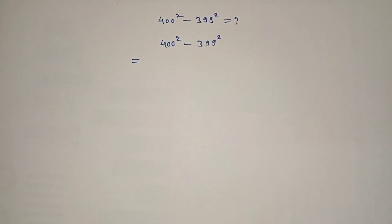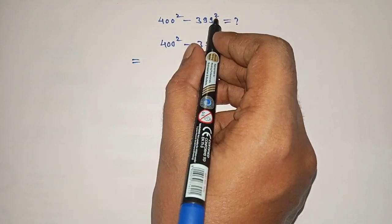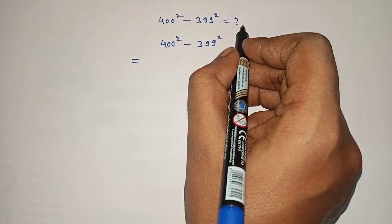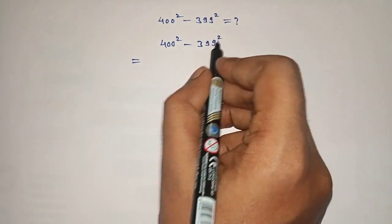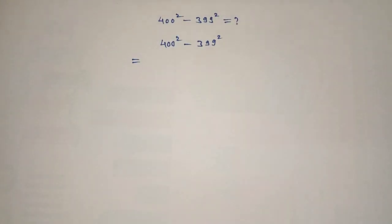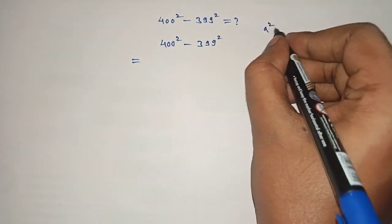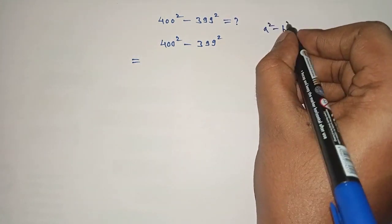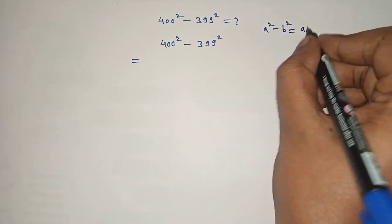Hello friends, welcome to Aha Maths. 400 squared minus 399 squared is equals to what? To solve this, we will use the formula: a squared minus b squared is equals to a plus b into a minus b.